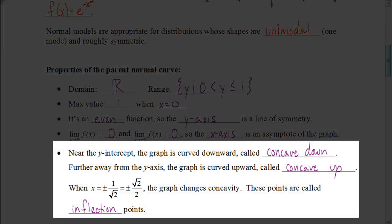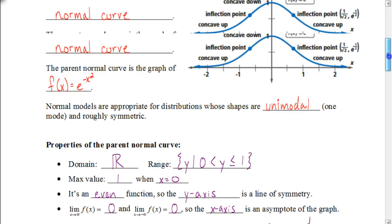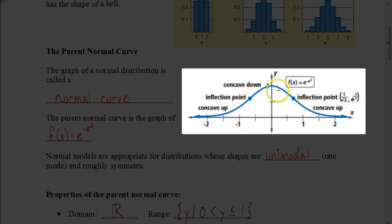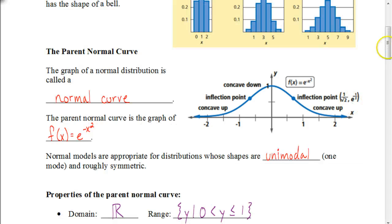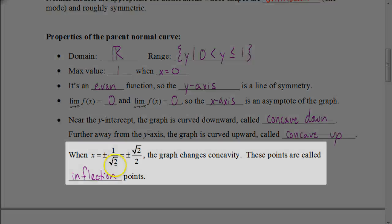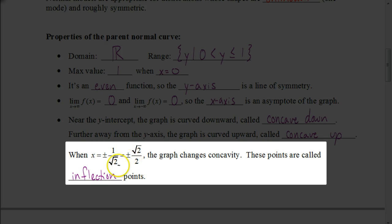Near the y-intercept, at the top of the graph, the graph is curved downward — we call it concave down. Further away from the y-axis, the graph is curved upward — we call that concave up. At the top part it looks kind of like a frown, so it's concave down. At the bottom of the graph, on both sides, it's concave up. The point where it changes from concave down to concave up is called the inflection point, and that happens at 1 over the square root of 2, or equivalently plus or minus the square root of 2 over 2.